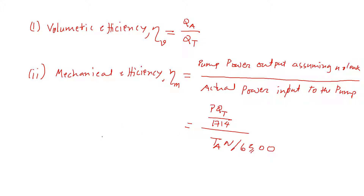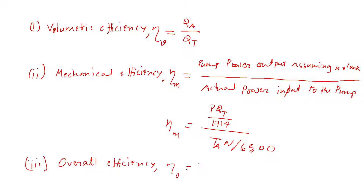That gives the mechanical efficiency equation. Now the overall efficiency is not really a third category but rather a combination of volumetric and mechanical efficiency. The overall pump efficiency, eta-O, is basically volumetric efficiency multiplied by mechanical efficiency.